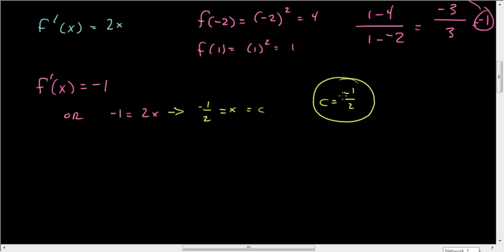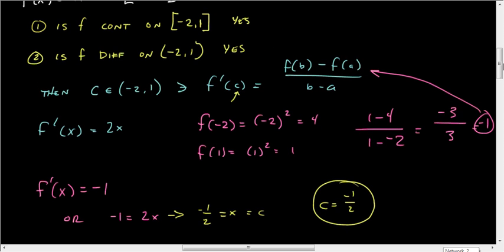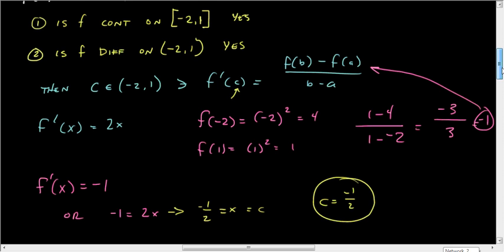This is the steps to go through for the Mean Value Theorem. One, is it continuous? Two, is it differentiable on the open? And if those two things hold true, then go through and find out the slope of the secant. So take the derivative, set the two equal, solve for x. Let's take another example on the next video.